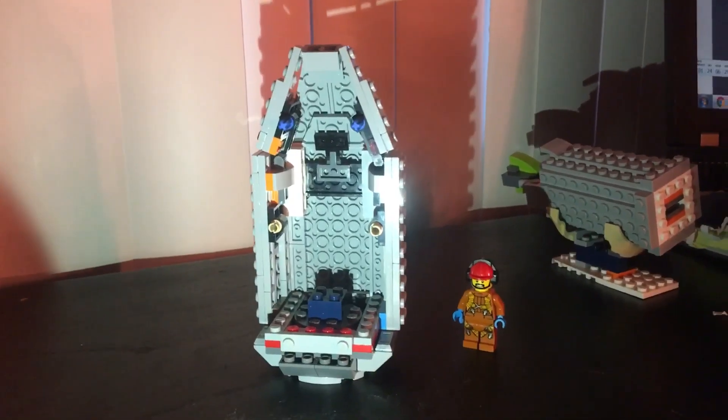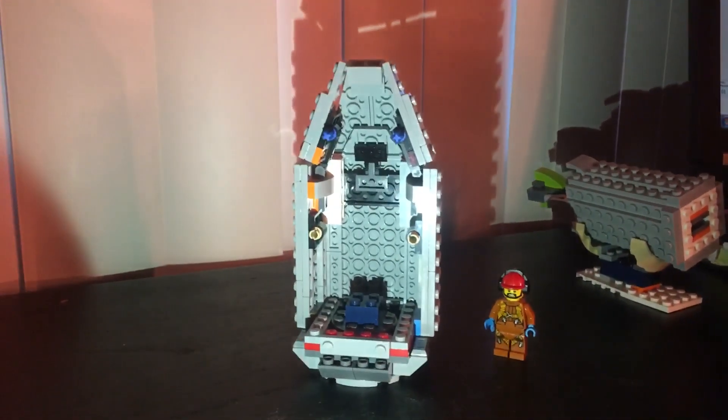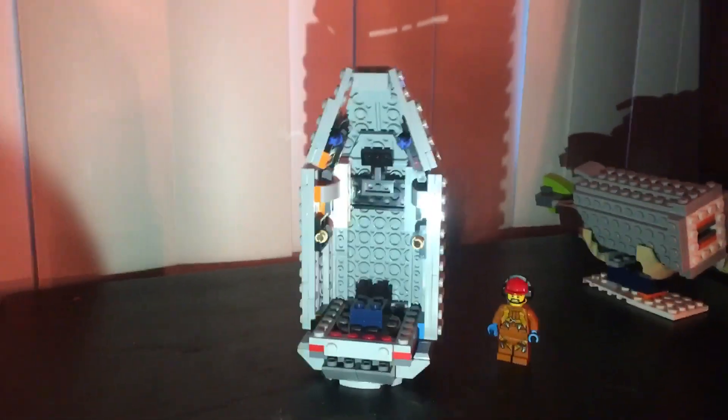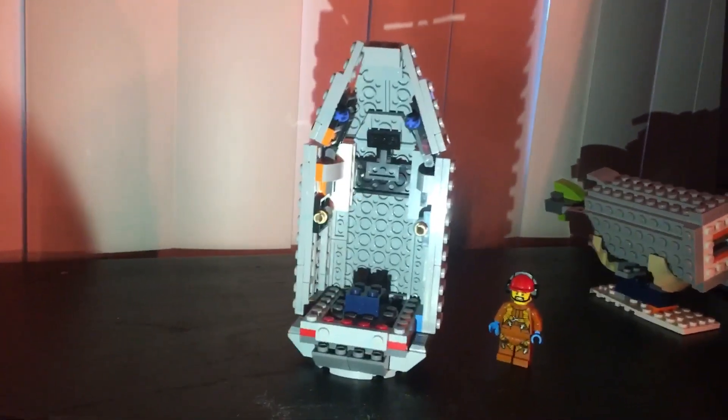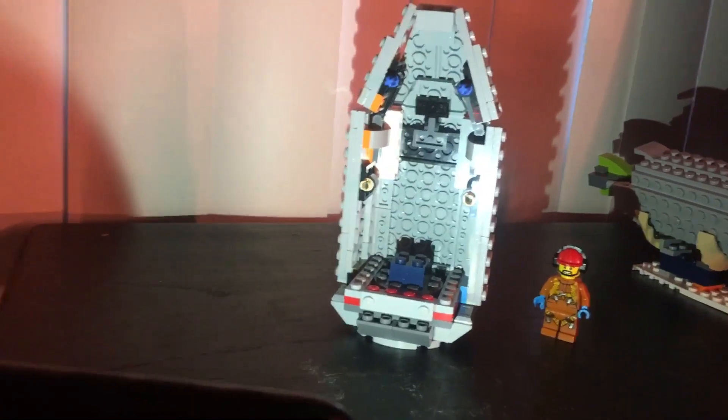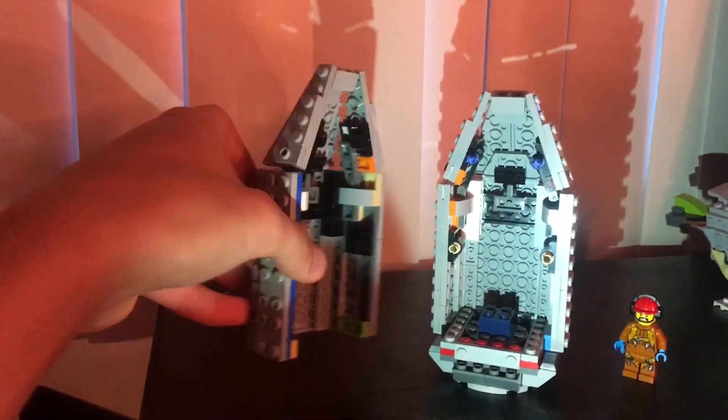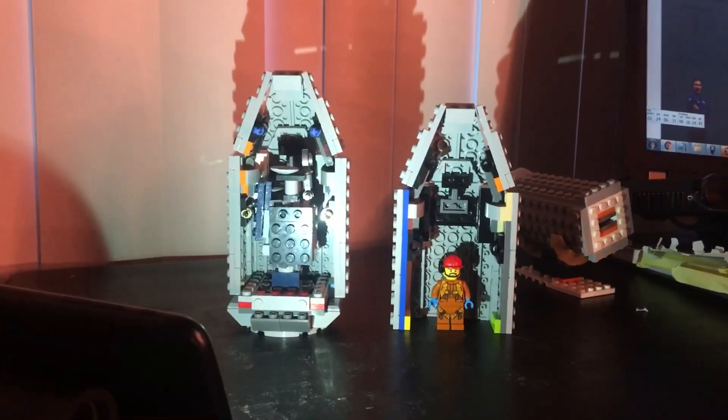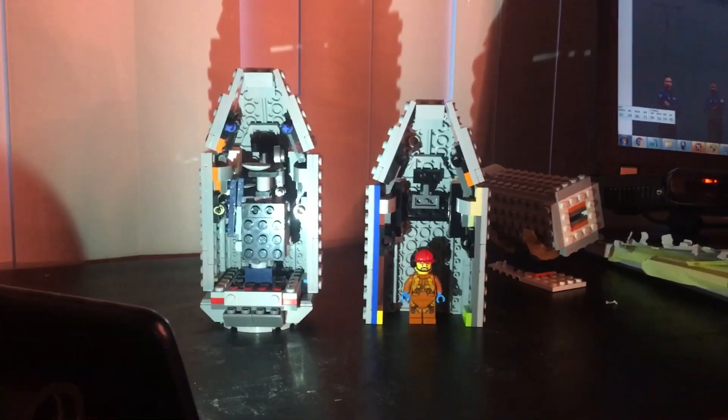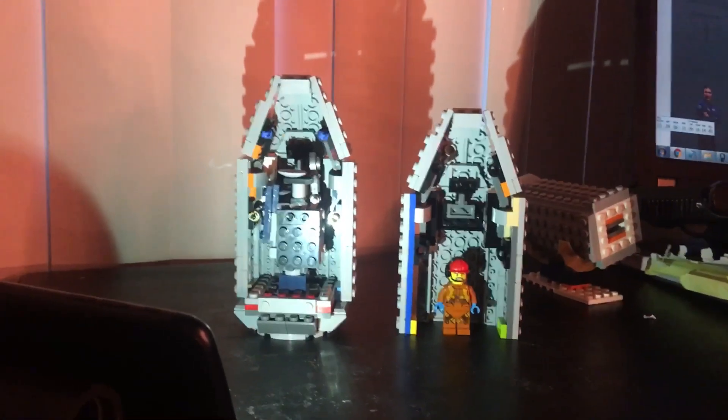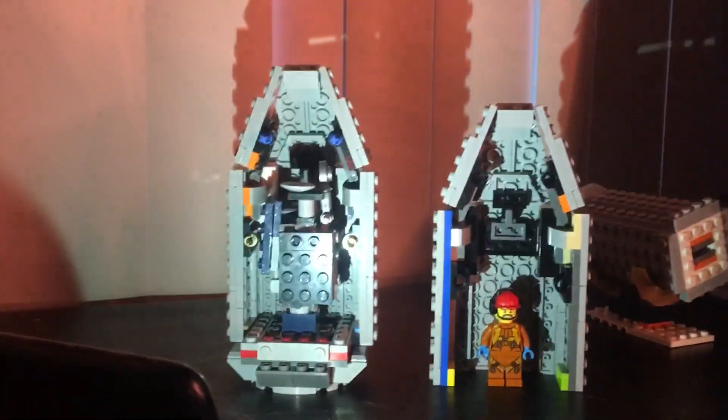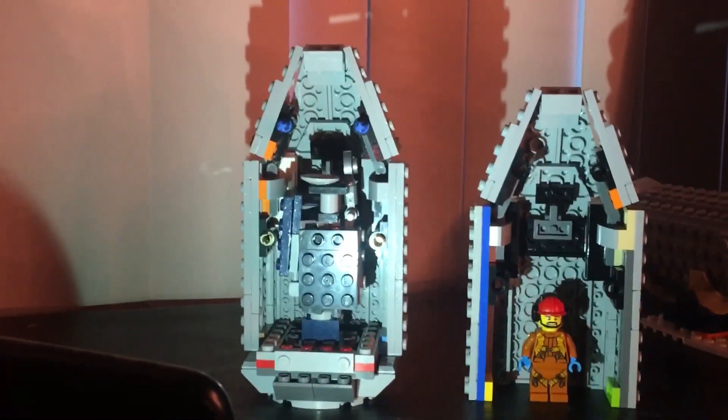One of the hardest parts about Falcon 9 was actually the payload fairings. The payload fairings actually split in half, which was quite hard and difficult to make. As you can see here, this is one half of the payload fairings. And here you can see a size comparison of Falcon 9's fairing halves versus a minifigure on the right, and the fairing halves with a payload on the left.